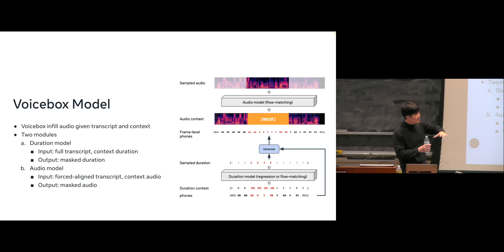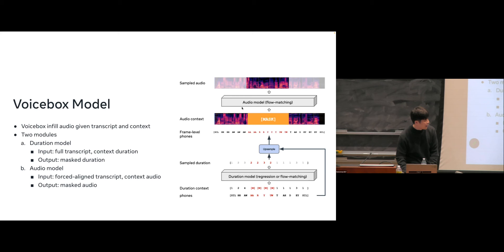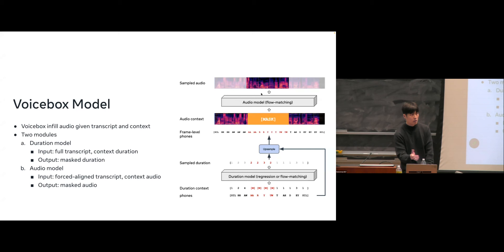We have two modules. We adopt a non-autoregressive architecture similar to FastSpeech 2: first, given phonemes and duration context obtained by force alignment, we predict the duration of the phonemes we want to infill. Once we have the force alignment, we condition on the force-aligned phonemes and the audio context, and train the model to predict the distribution of the missing audio from the context.